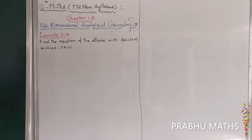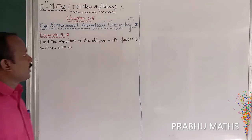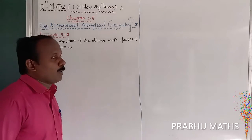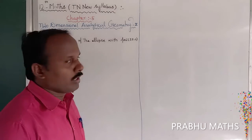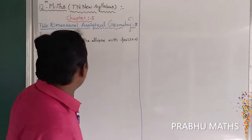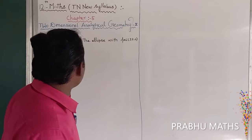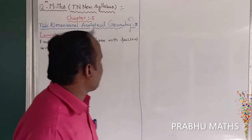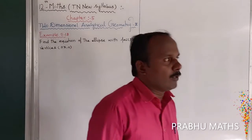Example 1, problem 5.18: find the equation of the ellipse with foci at plus or minus 2 comma 0, and vertices at plus or minus 3 comma 0.